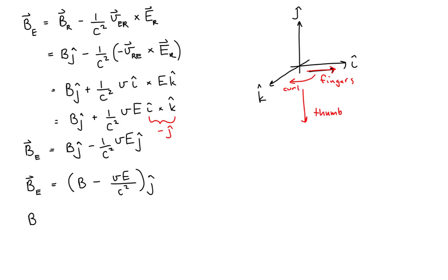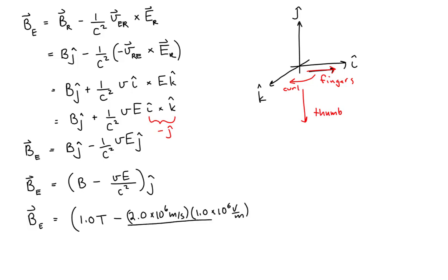Now let's plug in values. The magnetic field measured by the rocket ship is 1.0 tesla. The speed of the rocket ship is 2.0 × 10⁶ meters per second. The magnitude of the electric field is 1.0 × 10⁶ volts per meter, divided by the speed of light squared, which is (2.9979 × 10⁸ meters per second) squared, in the j-hat direction.